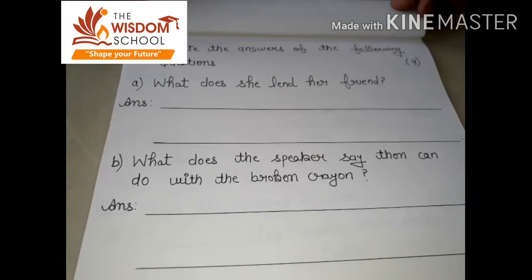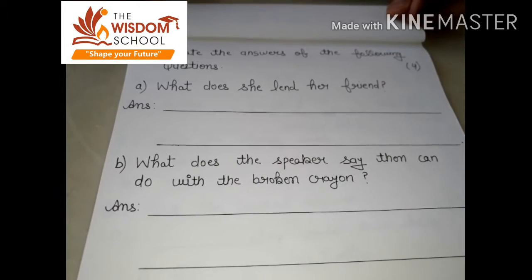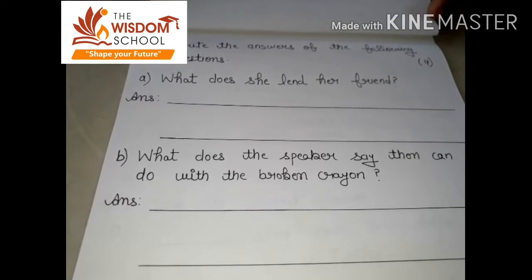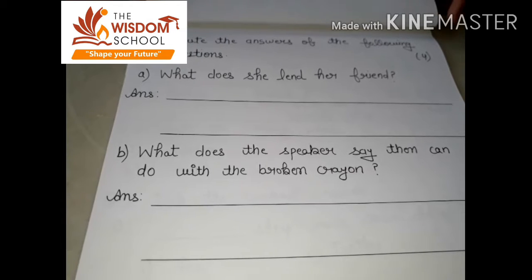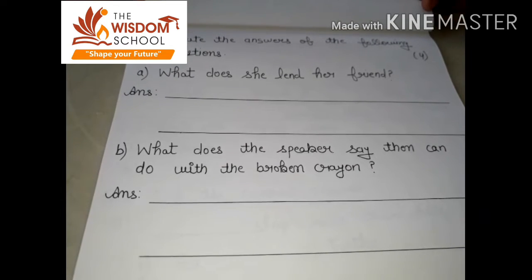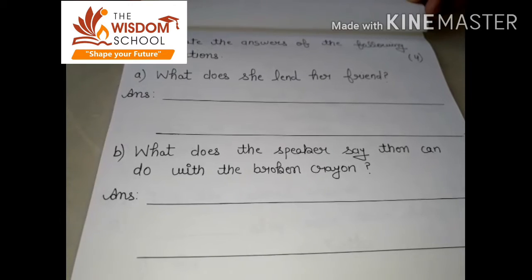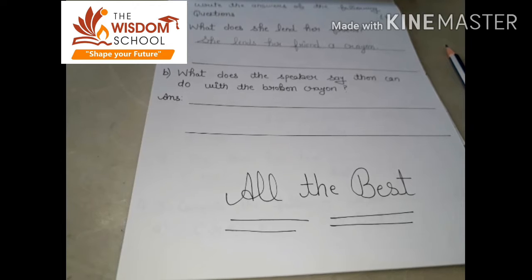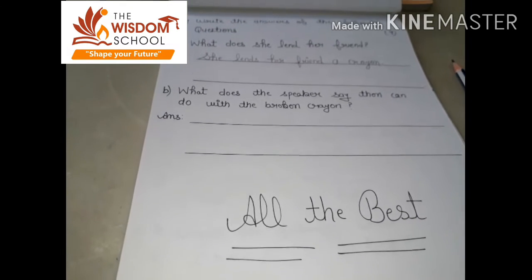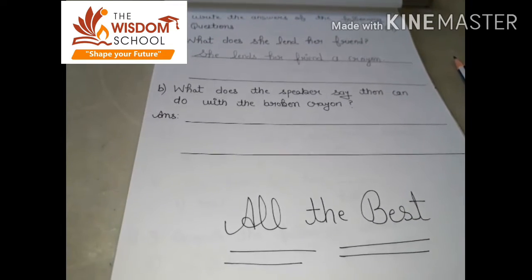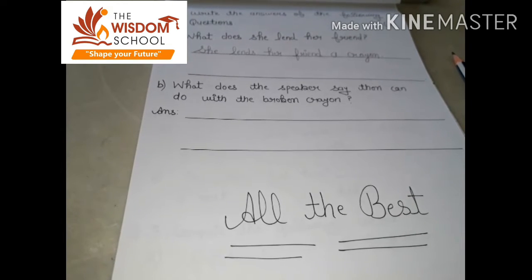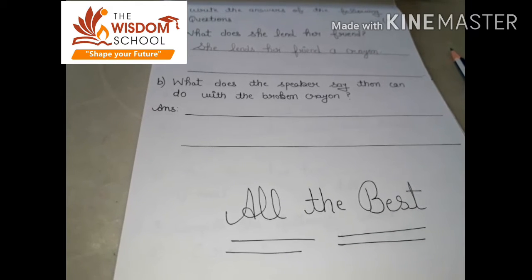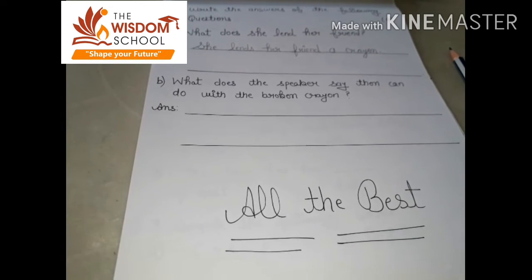Now come to the next question: write the answers of the following questions. First question — what does she lend her friend? Usne apne friend ko kya diya? She lends her friend a crayon. Ek crayon diya. Our next question is: what does the speaker say they can do with the broken crayons? Wo broken crayon se kya kar sakti thi? She says that they can share it — wo isko share kar sakti thi.